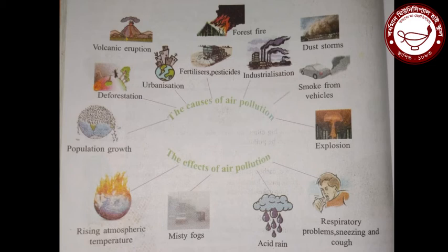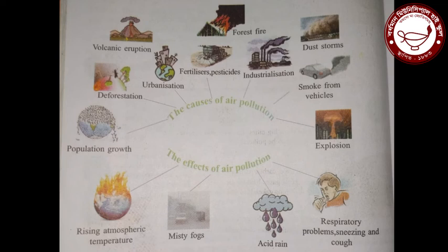We have to change our way of life and travel by bus or train instead of private cars. Air pollution can also be reduced if we use more non-polluting vehicles like electric trains, trams, metros, and bicycles. Cars with very old engines should not be used, because old engines pollute the air. In recent times, less-polluting engines manufactured with advanced technology are being used.